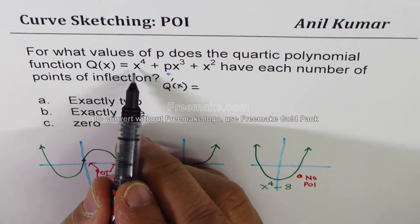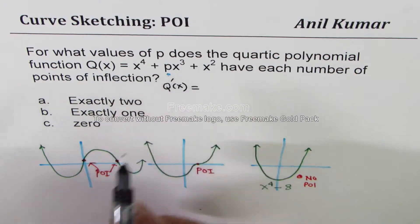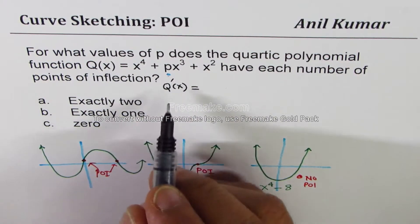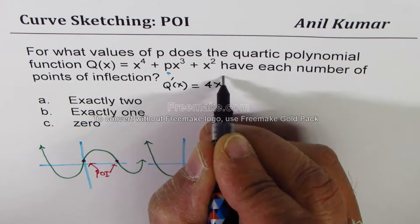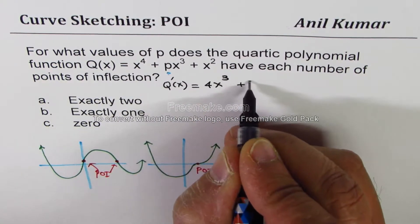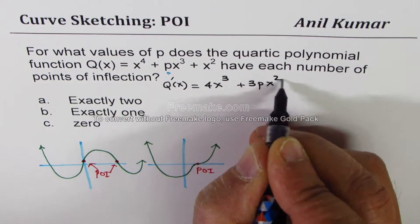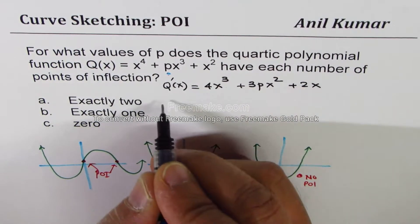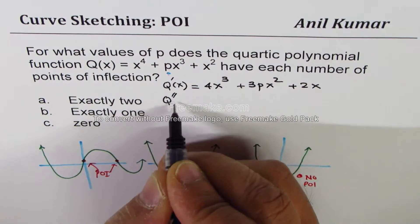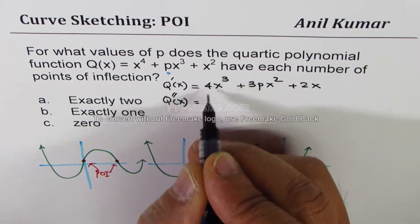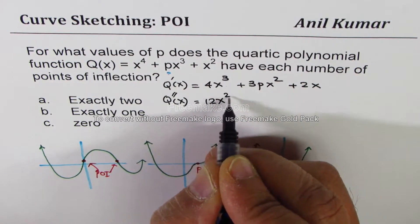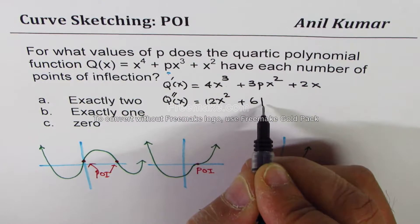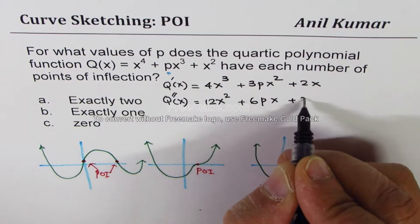The function is x^4 + px^3 + x^2. What is its derivative? 4x^3 plus 3px^2, and derivative of x^2 is 2x. Let's find the second derivative. The second derivative will be 12x^2, this will be 6px, and that will be plus 2.